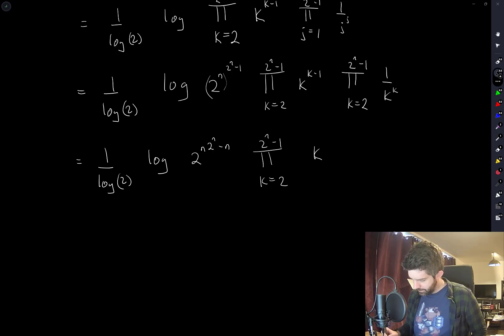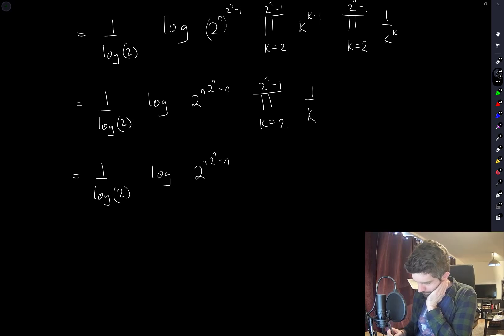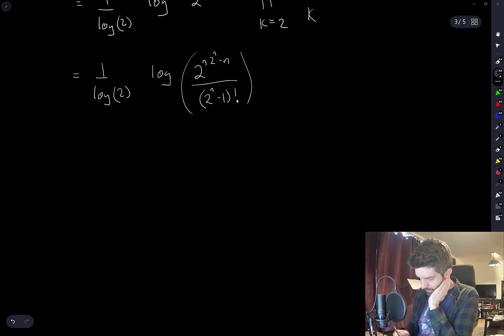I guess it's k. It's not going to be 1 over k squared. It is going to be 1 over k, right? It's k to the power of k minus 1 minus k. And this is nothing more than that number factorial in the denominator. So this is log base 2 of 2 to the n times 2 to the n minus n divided by 2 to the n minus 1 factorial.